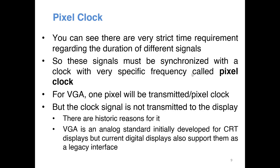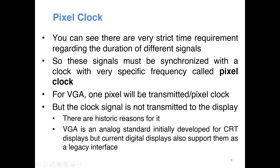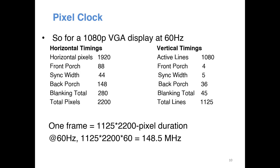Modern monitors are much more intelligent — they can adjust to different resolutions automatically. Connect a 1080p source and it switches to 1080p; connect 720p and it switches to 720p. Modern monitors analyze the incoming signals, and based on the duration and frequency of these signals they can automatically determine the resolution of the incoming video. It is very important that whoever is transmitting the video strictly adheres to the correct pixel clock frequency.